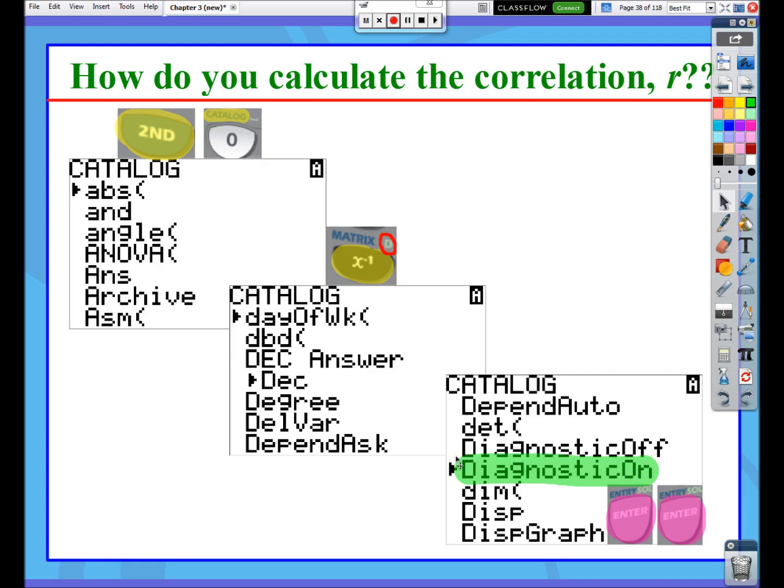So once you have got Diagnostic On here with your arrow, press Enter. And then you'll see it on your screen, it'll say Diagnostic On. And then press Enter again, and then it'll say Done. And that has turned on the Diagnostic.